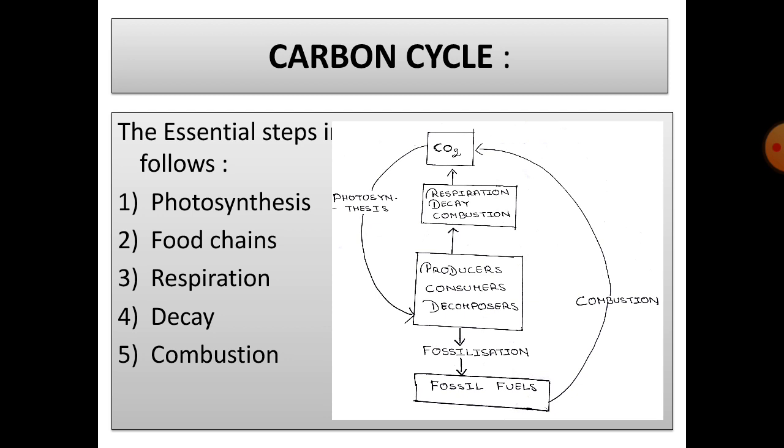Decay: the dead remains of plants and animals are consumed by bacteria and fungi. In the process, they break down the organic matter and release carbon dioxide into the atmosphere. Combustion: when a fuel such as wood or a fossil fuel like coal, petroleum, etc. is burned, carbon contained in it is oxidized to carbon dioxide, which is given back to the atmosphere. The essential steps of this carbon cycle include photosynthesis, food chain, respiration, decay, and combustion.